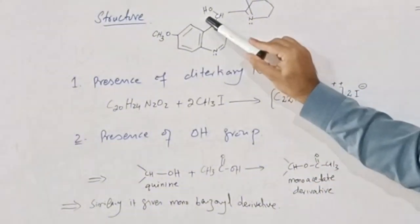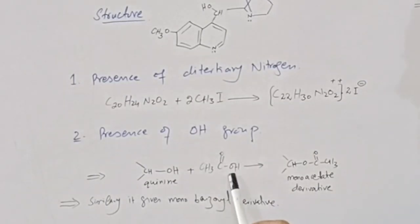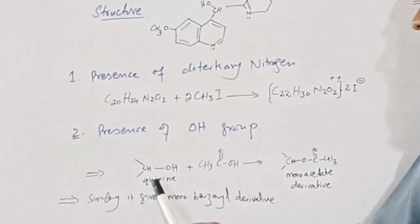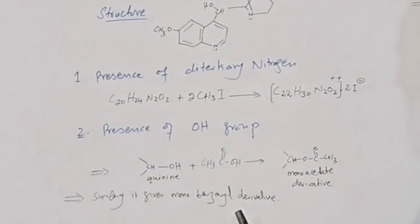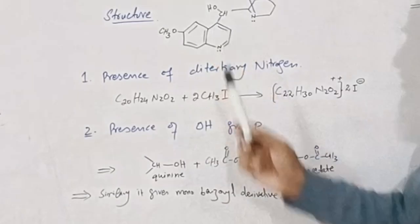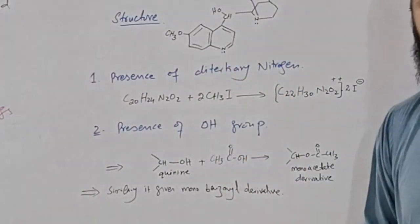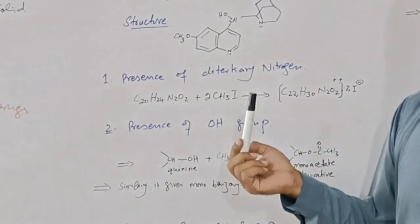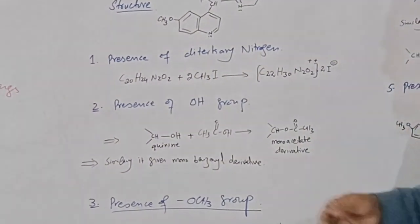A hydroxyl group is present. To check this, we treat quinine with acetic acid and we get a monoacetate derivative. If we treat quinine with benzoyl chloride, it also confirms the presence of a hydroxyl group. To check whether the hydroxyl group is in a phenolic state or not, we treat quinine with ferric chloride — it gives no color. This shows that the hydroxyl group is not in a phenolic state.